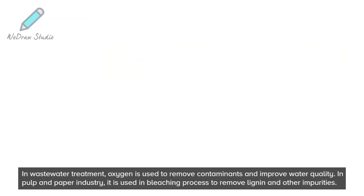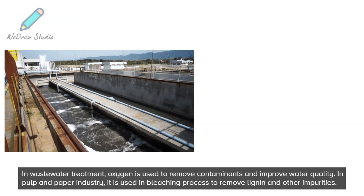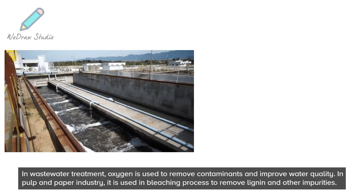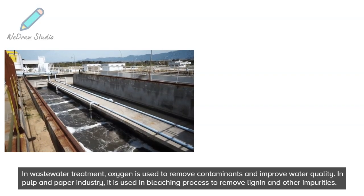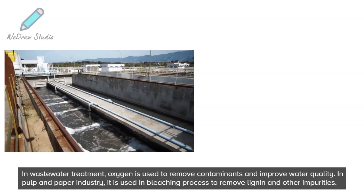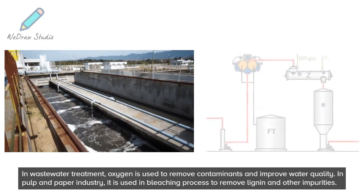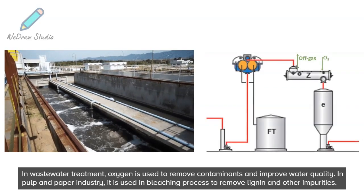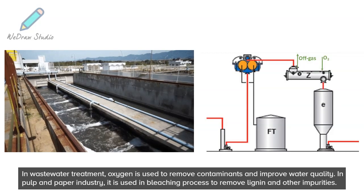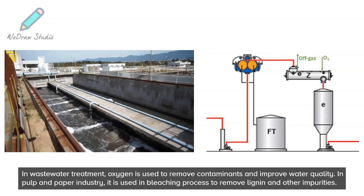In wastewater treatment, oxygen is used to remove contaminants and improve water quality. In the pulp and paper industry, it is used in the bleaching process to remove lignin and other impurities.